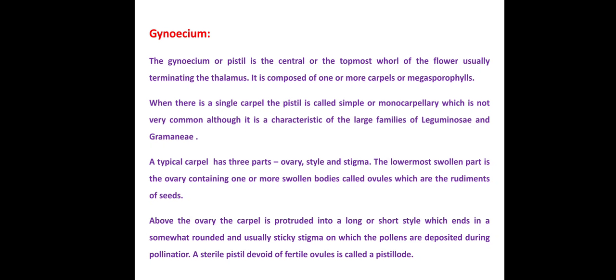A sterile pistil without a fertile ovule is called a pistillode. The diagram shows exactly what gynoecium looks like. The basal part is the thalamus, on which all floral members are arranged. Above the thalamus is attached the ovary, which contains the rounded body called an ovule. That ovary protrudes into a long or short style, and the tip of the style is called the stigma. The stigma is sometimes rounded and sometimes pointed with a sticky substance — it is the landing area for pollen grains for fertilization purposes.